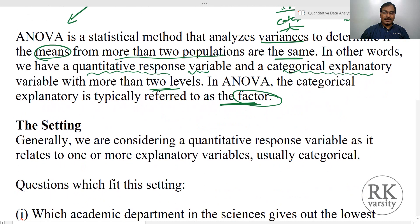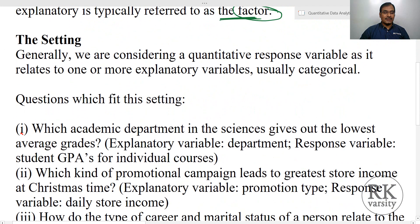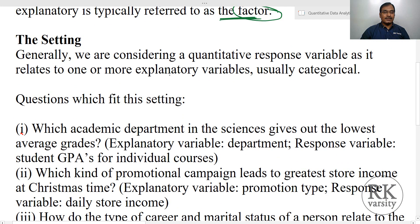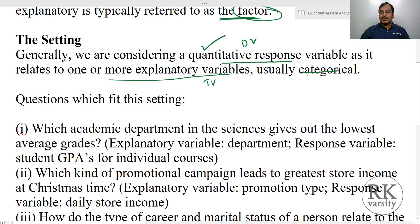The settings where we use analysis of variance are where we are considering a quantitative response variable. Your response variable — that is, your dependent variable — is a quantitative one, and it relates to one or more explanatory variables. Your explanatory variable — that is, your independent variable — is a categorical one. So the independent variable is categorical and the dependent or response variable is quantitative.